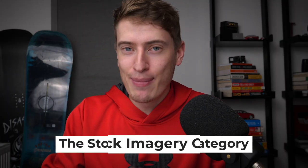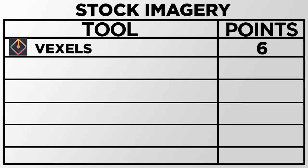Part three is stock imagery — which tool offers the most stock imagery you can use in your designs. Starting at number one is Vexels with six points, because they have over 70,000 different stock images you can use with a merch license at $22 a month. Some people note that if you cancel your merch license you can no longer use the imagery, but if you're making sales with Vexels designs, why would you cancel?